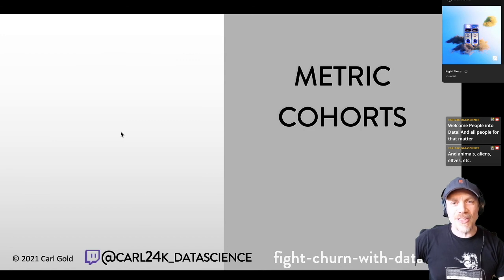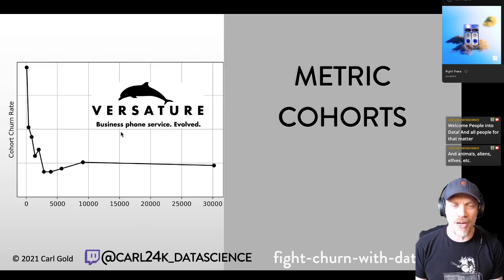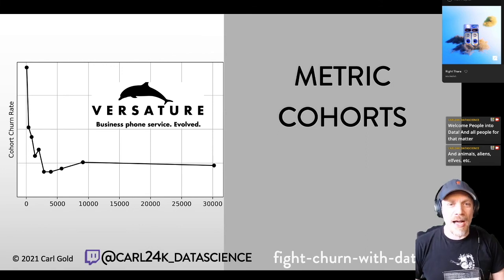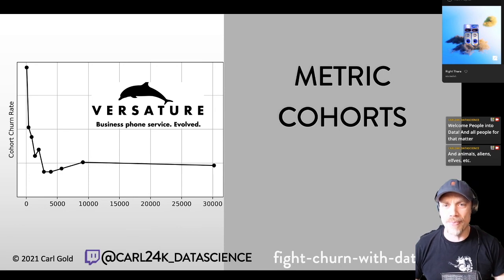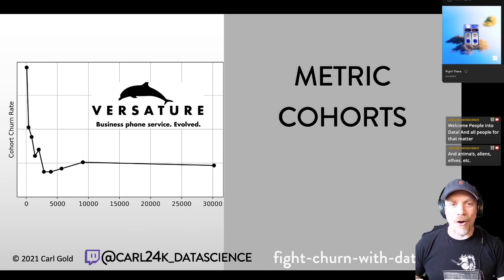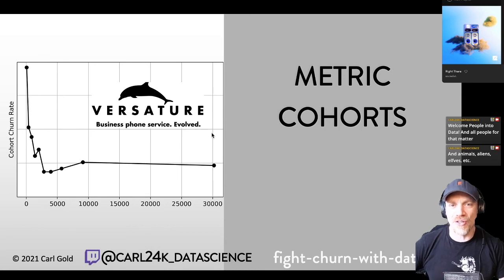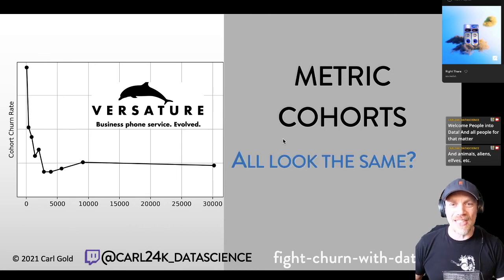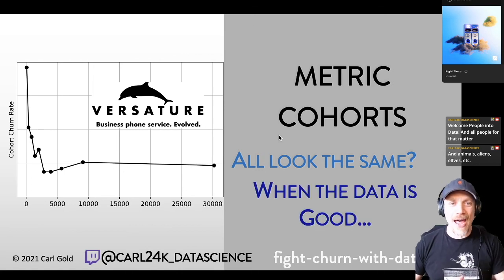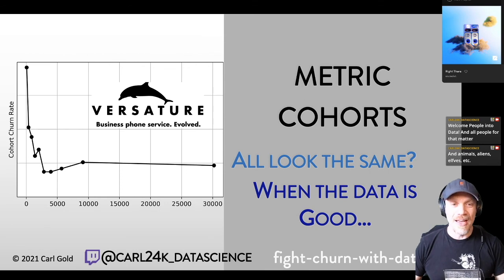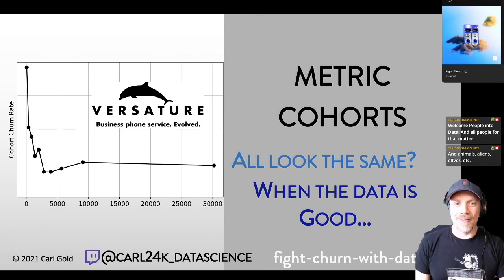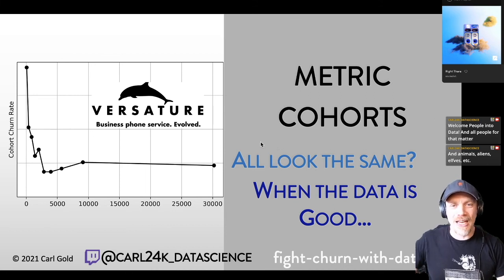One more example: churn study originated with telco, and Versature is a telco I worked with — they're voice over IP providing online telecommunication services. This shows that calls per month is also very strongly related to churn for people on the Versature service. All these churn cohorts kind of have the same shape where churn is reduced and then there's an elbow. So if you have clean data for any product or service, you should be able to form cohort charts and they should look roughly like these.